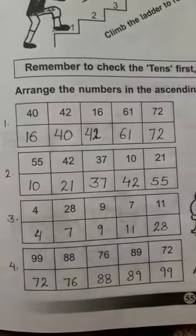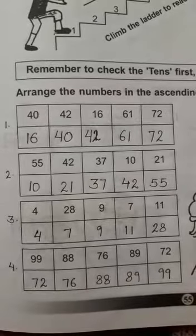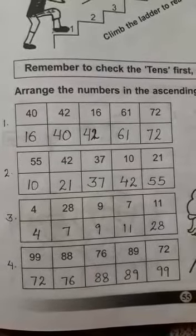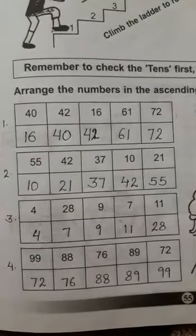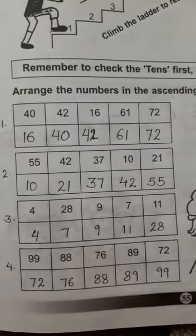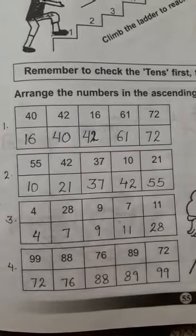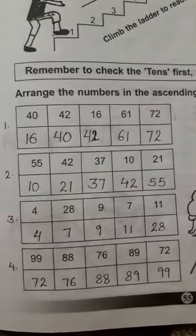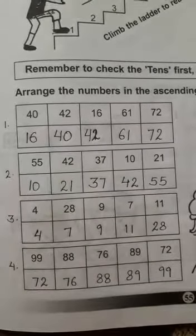And the last example: 99, 88, 76, 89, and 72. Again, comparing the two-digit numbers at the tens place. For 76 and 72, we should go to the ones place - that is 6 and 2. Since 2 is smaller than 6, 72 will be the first number.